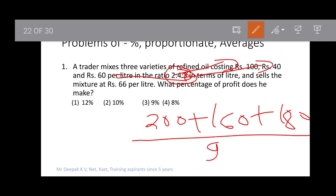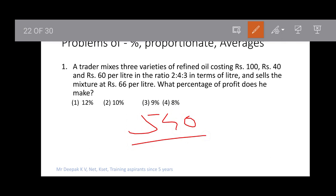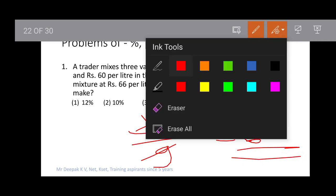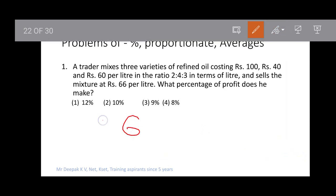So 540÷9 = 60. The cost per liter is Rs. 60 and he sells for Rs. 66, so the profit is Rs. 6. This is 10% of 60.